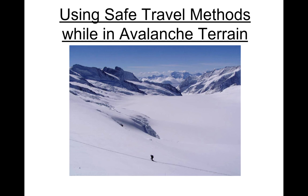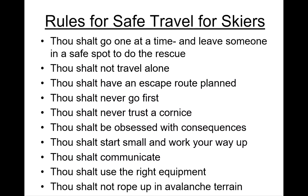There are lots of different ways to talk about avalanche terrain and the safe travel methods we use if we decide to enter avalanche terrain. Bruce Temper came up with a list of basic rules for avalanche terrain and travel. It's in a slightly jokey format but all these rules are super pertinent. The first rule for safe travel for skiers is: thou shall go one at a time and leave someone in a safe spot — having a spotter and a safe group-up area, watching people travel through the slope one at a time.